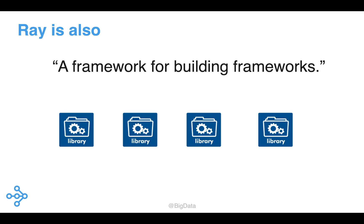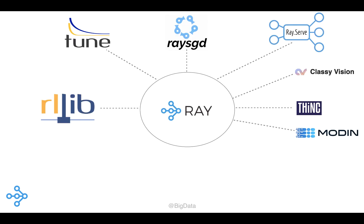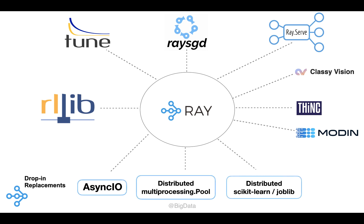Ray is also general enough that companies and users are building flexible libraries and other frameworks on top of it. There are two types of libraries in the Ray ecosystem. First are libraries for new workloads — examples include libraries built on top of Ray that address different aspects of machine learning. Secondly, there are drop-in replacements for parallelizing existing libraries used by Python developers.